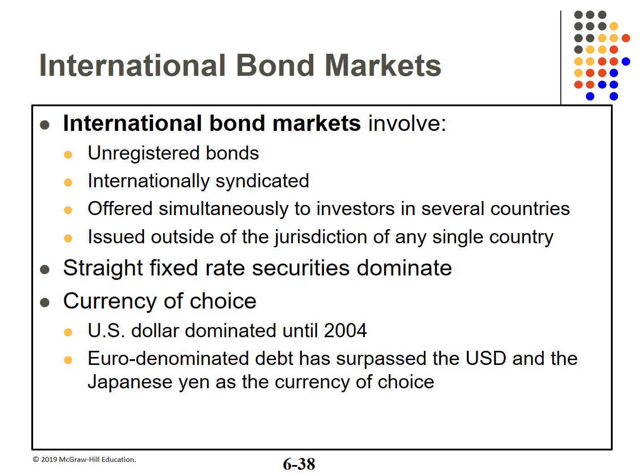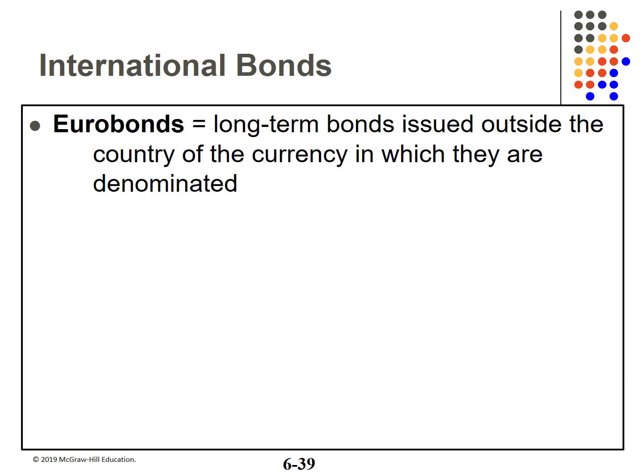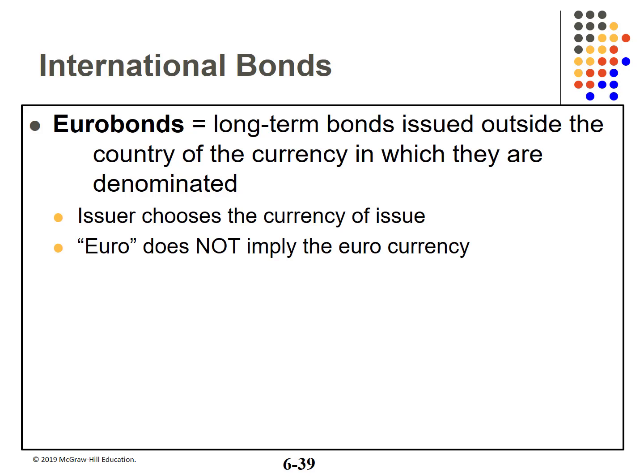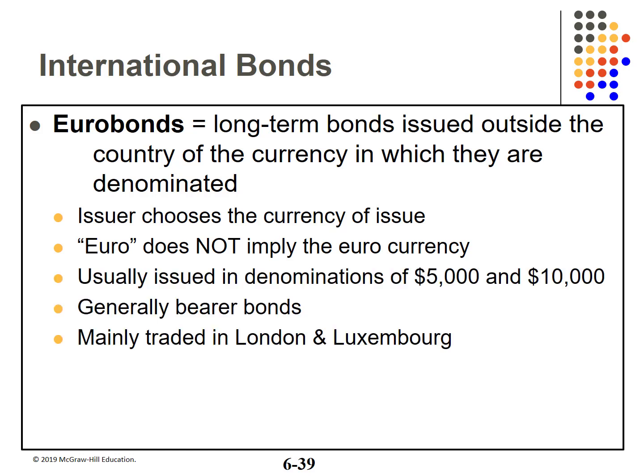Most international bonds are plain vanilla fixed-rate securities. The U.S. dollar was the currency of choice until 2004, when the Euro took the lead. Eurobonds are long-term bonds issued outside the country of the currency in which they are denominated — the issuer chooses the currency. Note that 'Euro' has nothing to do with Europe or the euro currency. Denominations are usually $5,000 and $10,000. They are generally bearer bonds, and trading is mainly in London and, interestingly, Luxembourg.